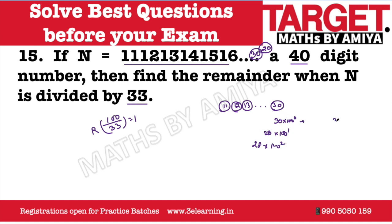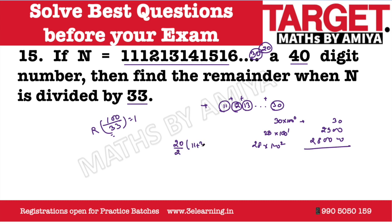How does this work? This one is 30, this one is 2900, this one is 2800. When we add, we get the same series. So here we can say we just need to add all the double-digit numbers from 11 to 30, then divide by 33. So what is the summation? We have 20 numbers: n/2 × (first term + last term).